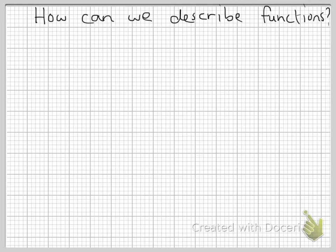There are four basic ways of describing what a function does. The first is verbally. Here's an example.